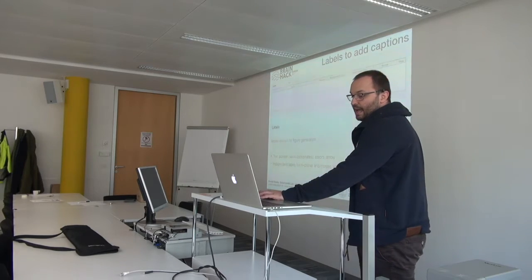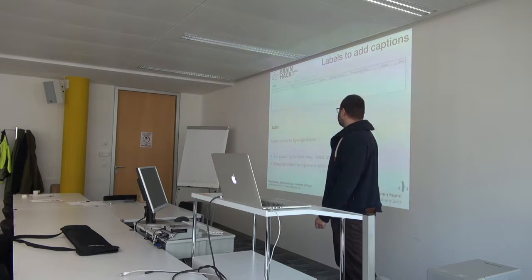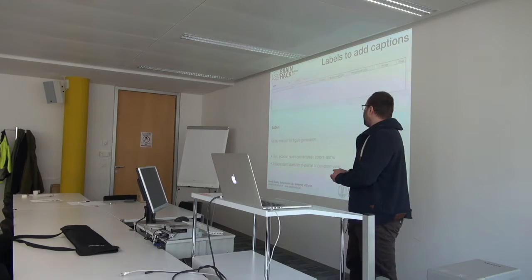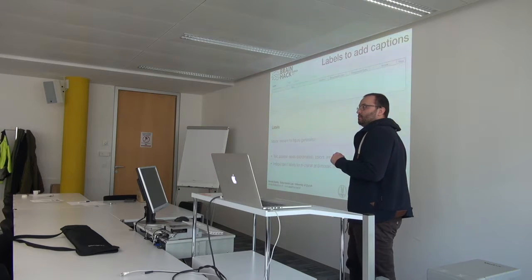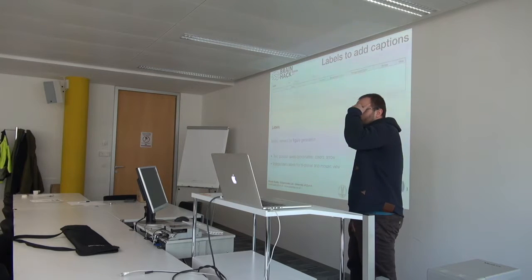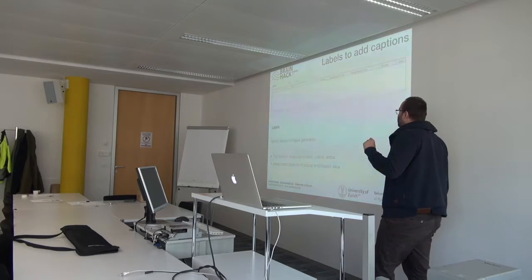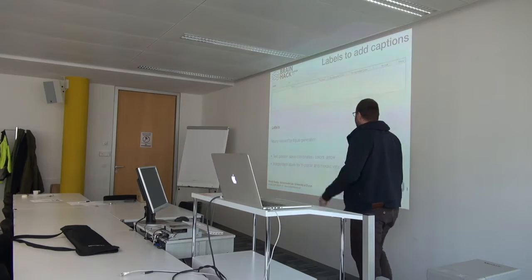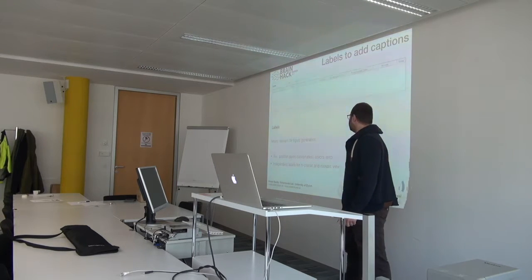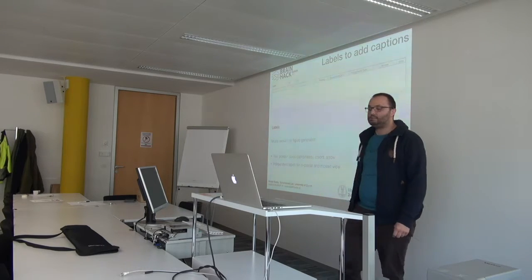The next section is labels. You can add text, specify the position — which is in axis coordinates relative to your figure, not voxel space — meaning when you move to different slices, the labels don't move with the data; they stay relative to the figure window. You can specify different colors and arrows, and you get independent labels for triplanar and mosaic views.